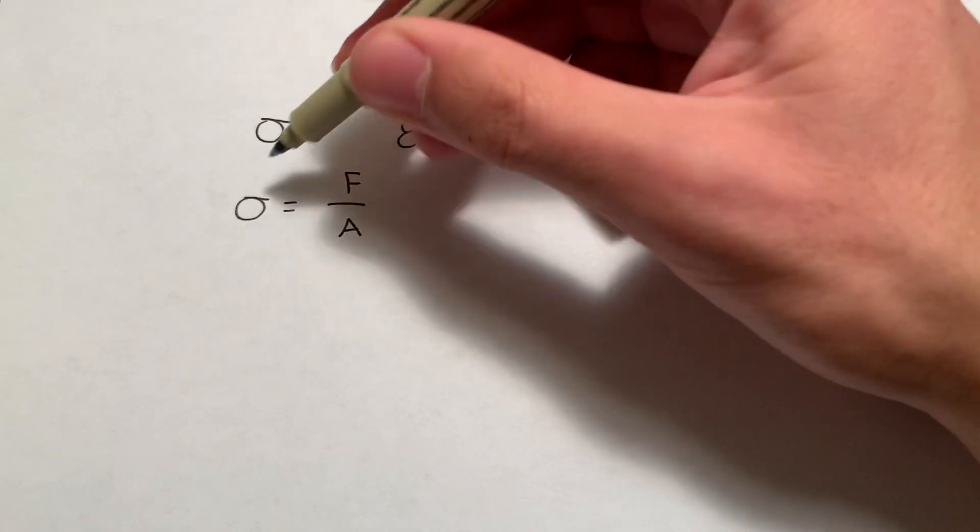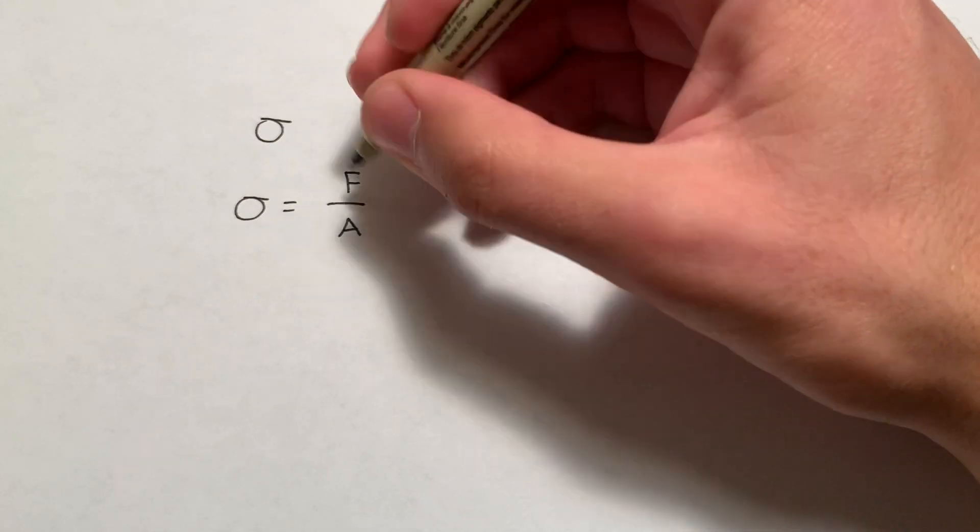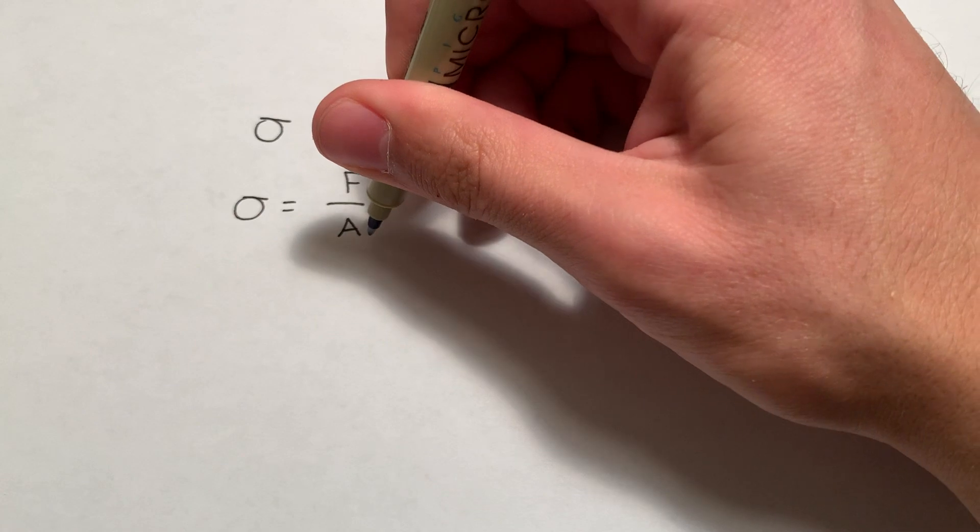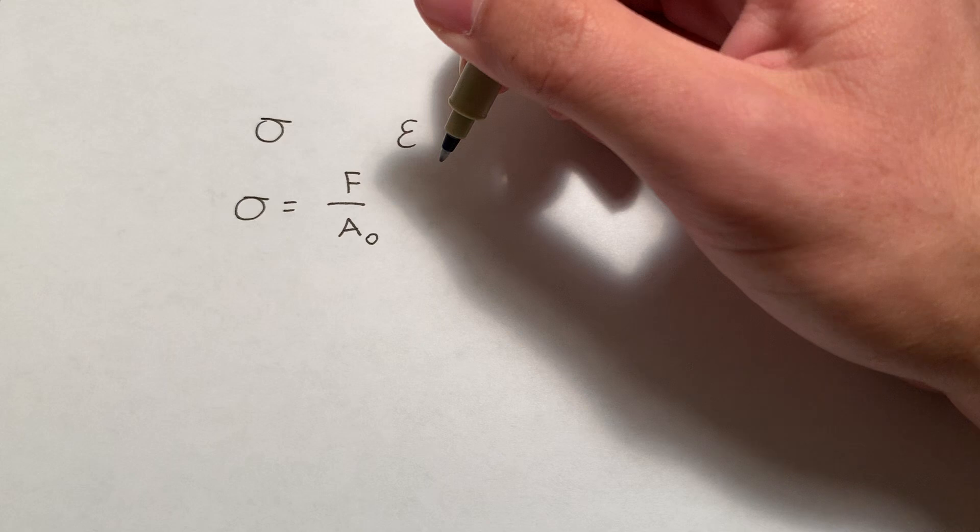Engineering stress, you might hear the term, is force per unit area. But you might give it this little subscript, A0, which is to say the original cross-sectional area. Because of course, as you load a material, even a rock, it's going to deform.